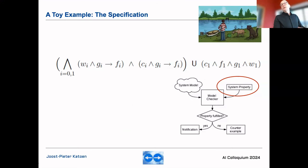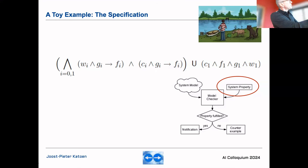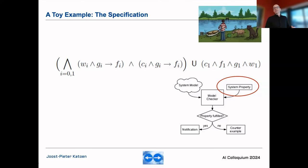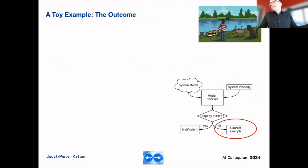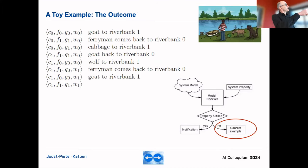Before reaching the other riverbank, the wolf should not eat the goat and the goat should not eat the cabbage. This must hold until you get there. By negating this formula and checking it, the model checker gives a counterexample — and that counterexample is actually the way to solve the puzzle. This scales to very large, industrial-size models.